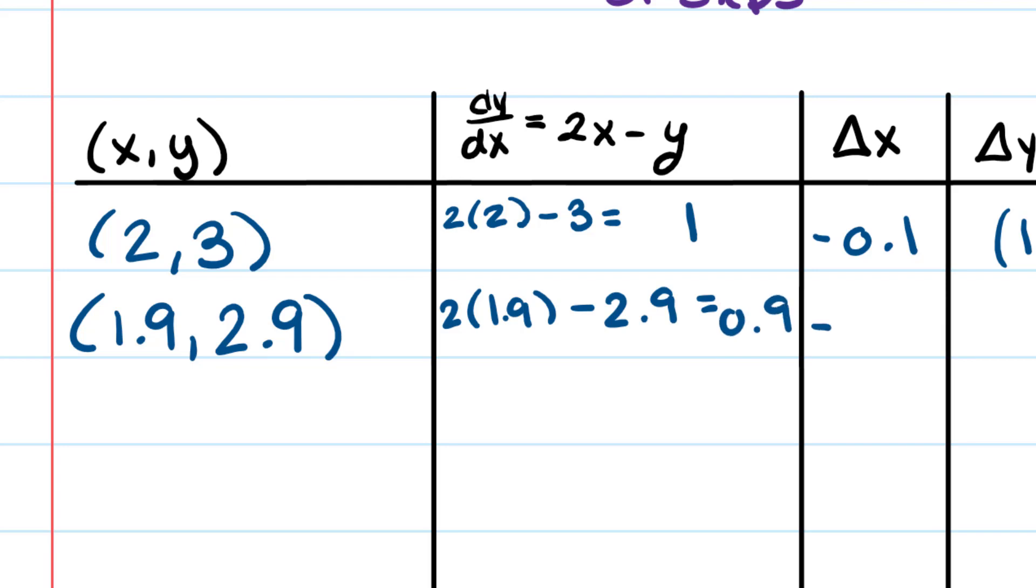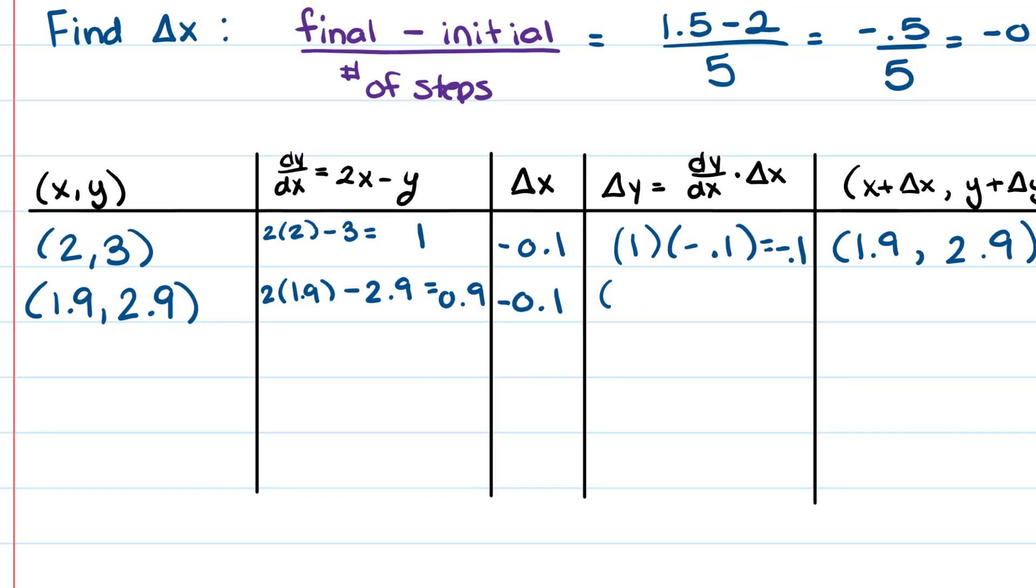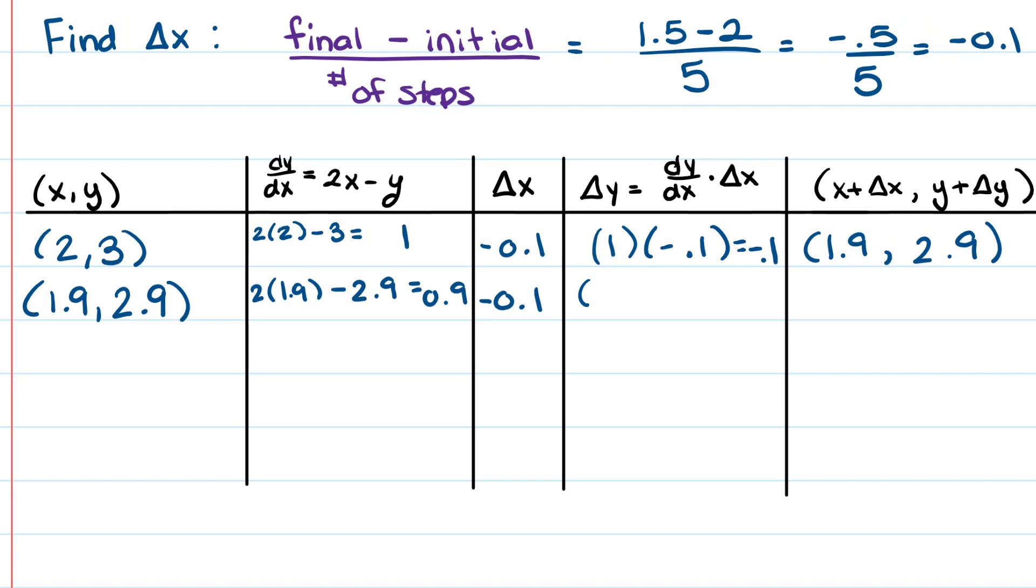Delta x is negative 0.1. So delta y is delta x times dy/dx. So it's 0.9 times negative 0.1, which gives me negative 0.09.